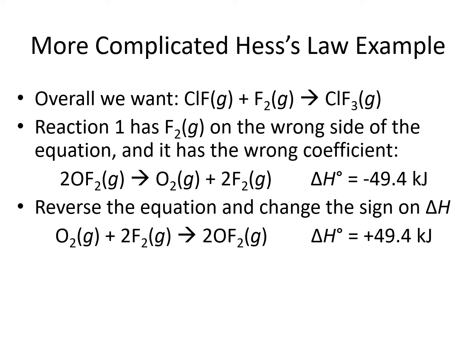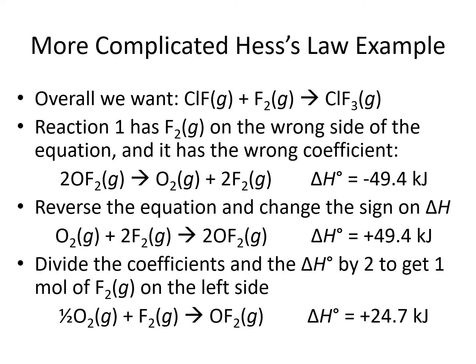Let's fix the side of the equation first. We're going to reverse the equation by putting the reactants on the product side and the products on the reactant side. When we do that, we change the sign on delta H from a negative to a positive. We've got an F2 on the left side where we want it, but it still has the wrong coefficient — it has a 2 but we want it to be a 1. To fix it, we're going to divide the whole equation by 2. 1 divided by 2 gives us 1/2 in front of the O2; 2 divided by 2 gives us 1 in front of the F2; and 2 divided by 2 gives us 1 in front of the OF2. Positive 49.4 divided by 2 gives us positive 24.7 as the manipulated delta H. We ended up reversing equation number 1 and dividing by 2, and changing the sign and dividing by 2 for delta H.